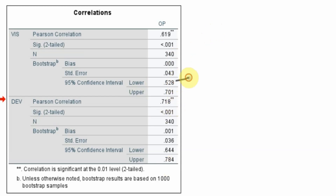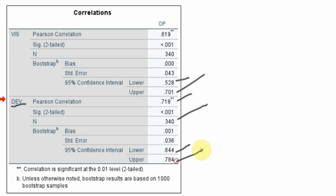We have the lower level and the upper level of the confidence interval. The relationship between development and organizational performance is also significant, with two asterisks indicating significance at the 0.01 level. We also have the sample size and the 95% confidence interval with its lower and upper levels.